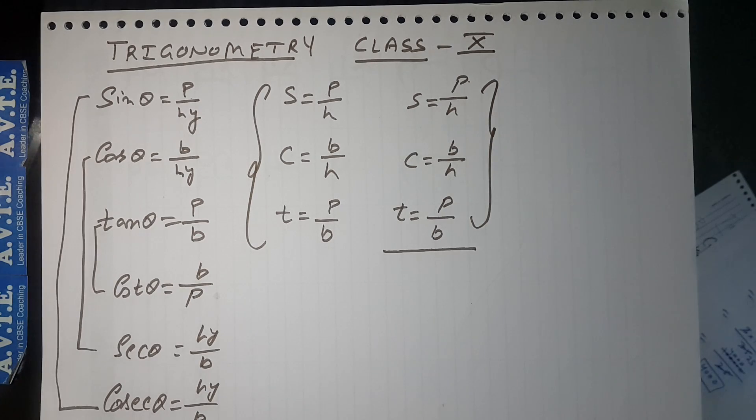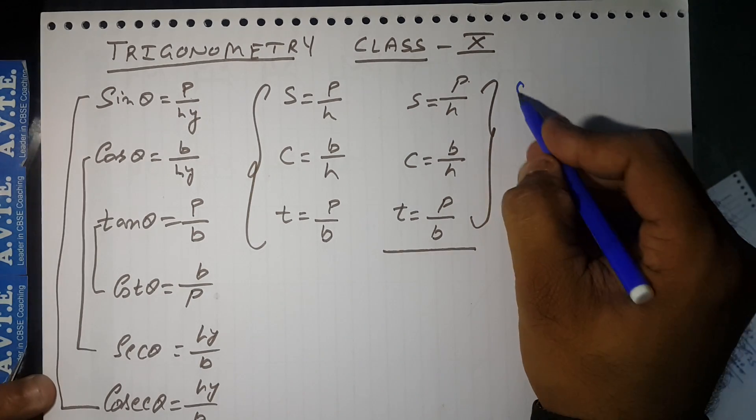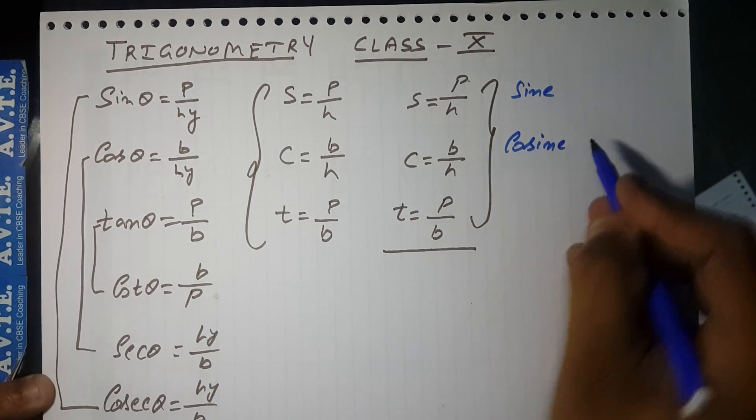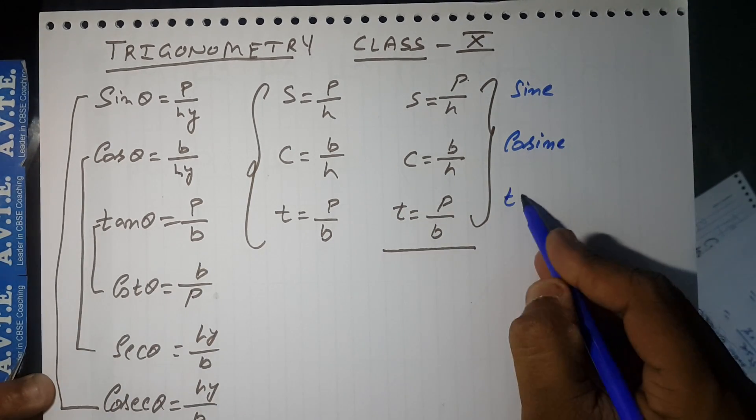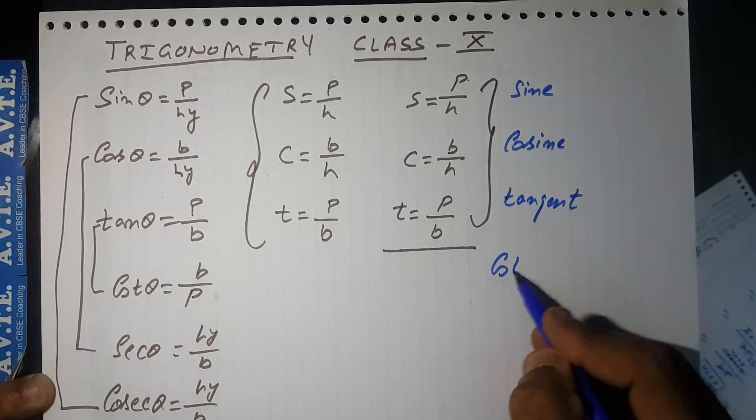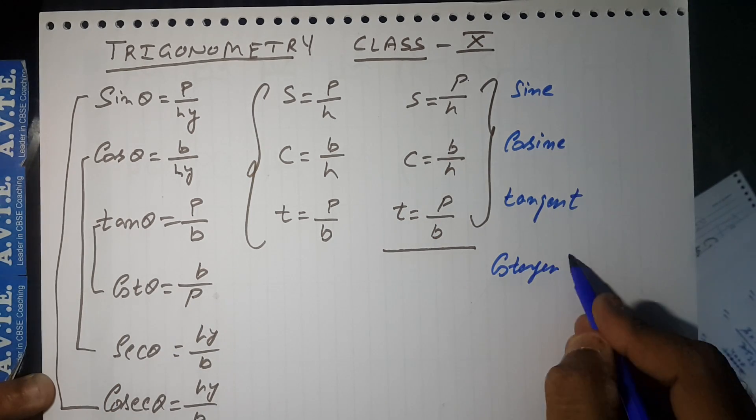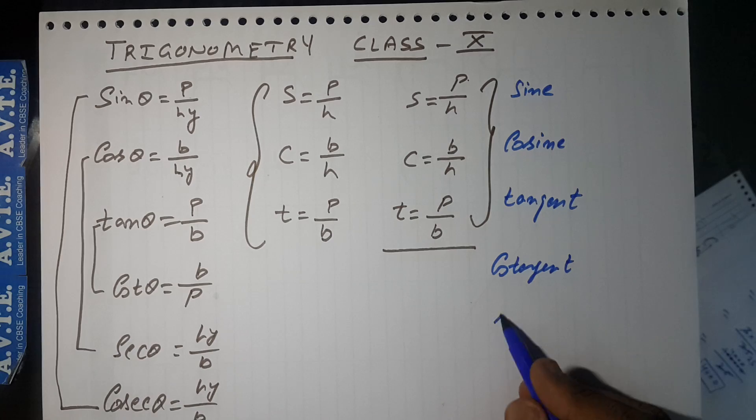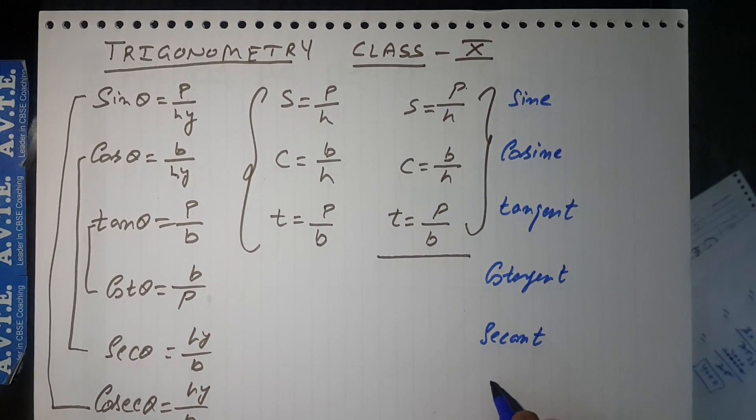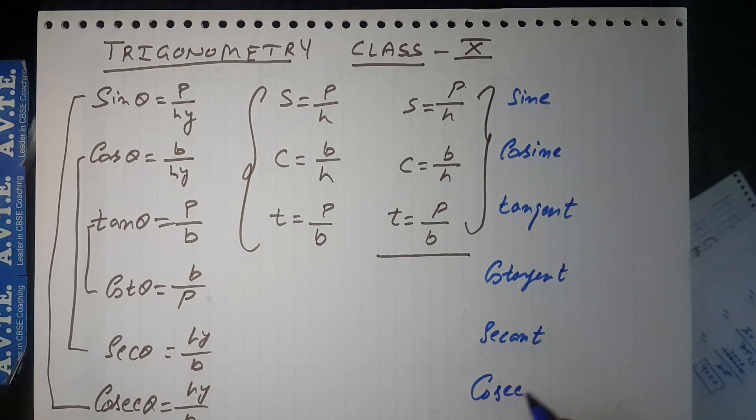The spelling of sin θ is sine, cos is cosine, tan is tangent, cot is cotangent, sec is secant, and cosec is cosecant.